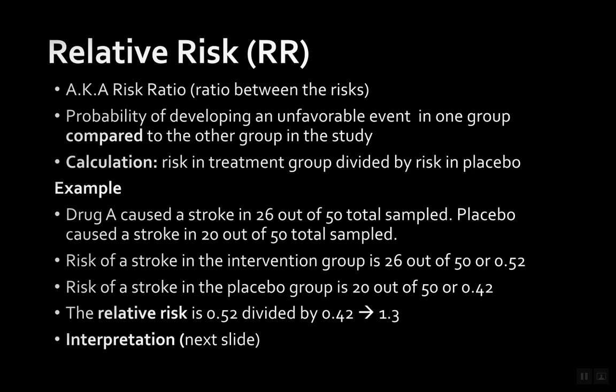Next we have relative risk, sometimes known as risk ratio. This is the ratio between the risks of two groups. In clinical studies, you usually compare two things — the intervention group and the placebo group. In each group you can calculate the risk, and relative risk is just the ratio between those groups.